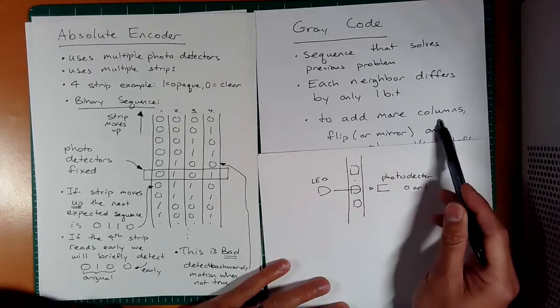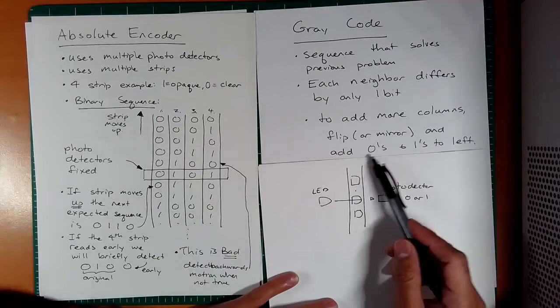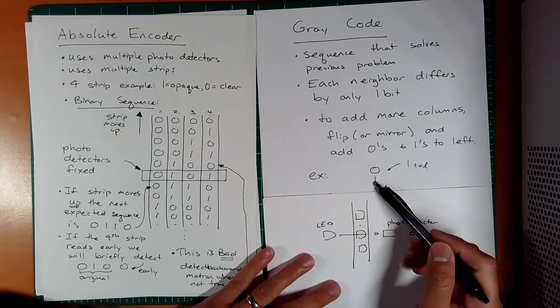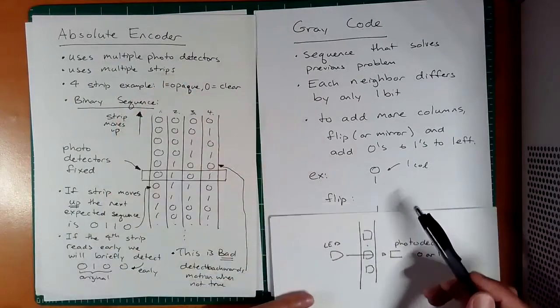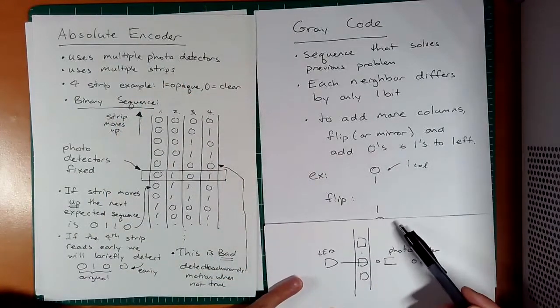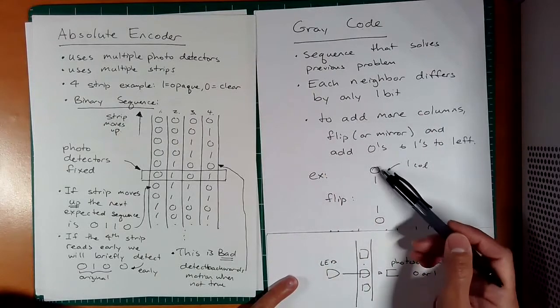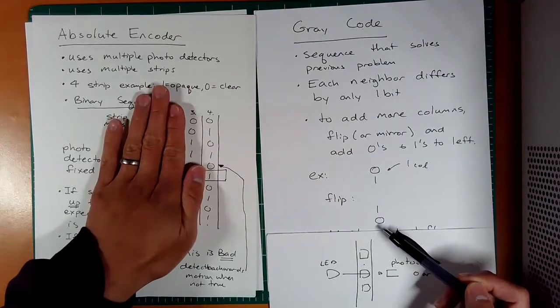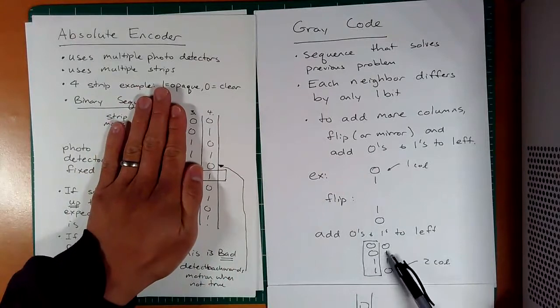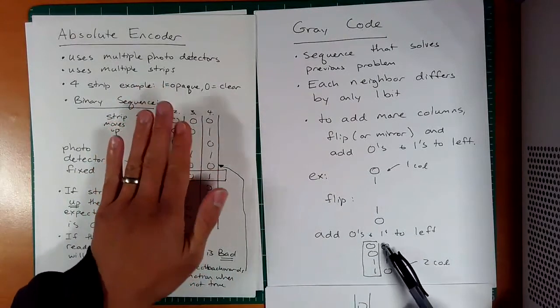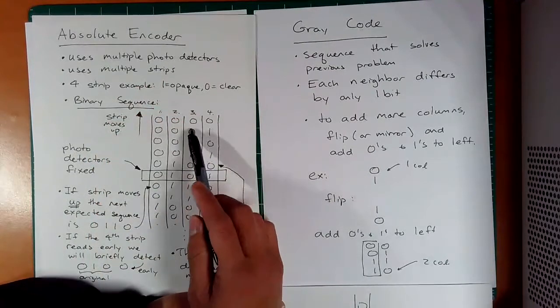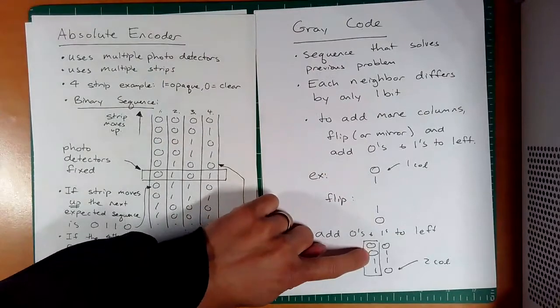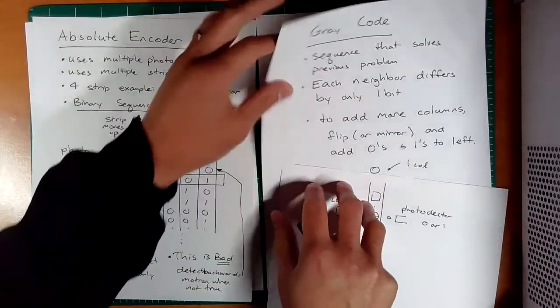So how do we build a gray code sequence? Well, the rule is to add more columns, you're going to flip or mirror and add zeros and ones to the left. So that doesn't really make sense until we just do an example. So let's say we have one column one bit, kind of like this. Well, it's kind of like binary. So then how do we add the next column? We're going to flip, just as we said here, flip, so 0110. Notice how it's not quite the same as 0101, so this would be 0110, and then we're going to add zeros and ones, similar to binary. But notice you can already see the difference between a binary sequence and a gray code. Gray code has 00011110, whereas a binary has 00011011. Notice it's not quite the same. And also notice that we only get one bit change in between.